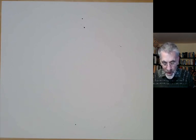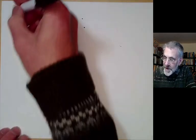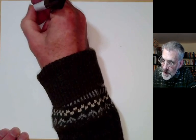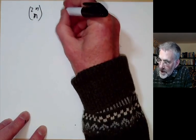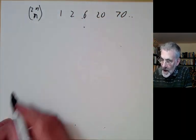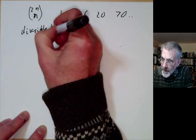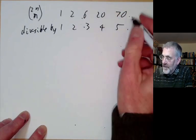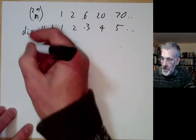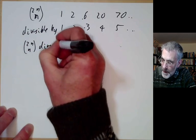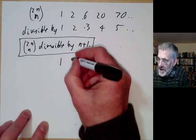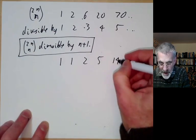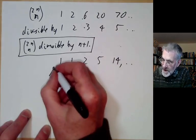There's one final application of number theory and binomial coefficients I want to mention. Looking at the middle binomial coefficients C(2n, n): 1, 2, 6, 20, 70, and so on, you may notice these are divisible by 1, 2, 3, 4, 5 respectively. In fact, C(2n, n) is always divisible by n+1. Dividing by n+1 gives the sequence 1, 1, 2, 5, 14, ..., which is the famous sequence called the Catalan numbers.